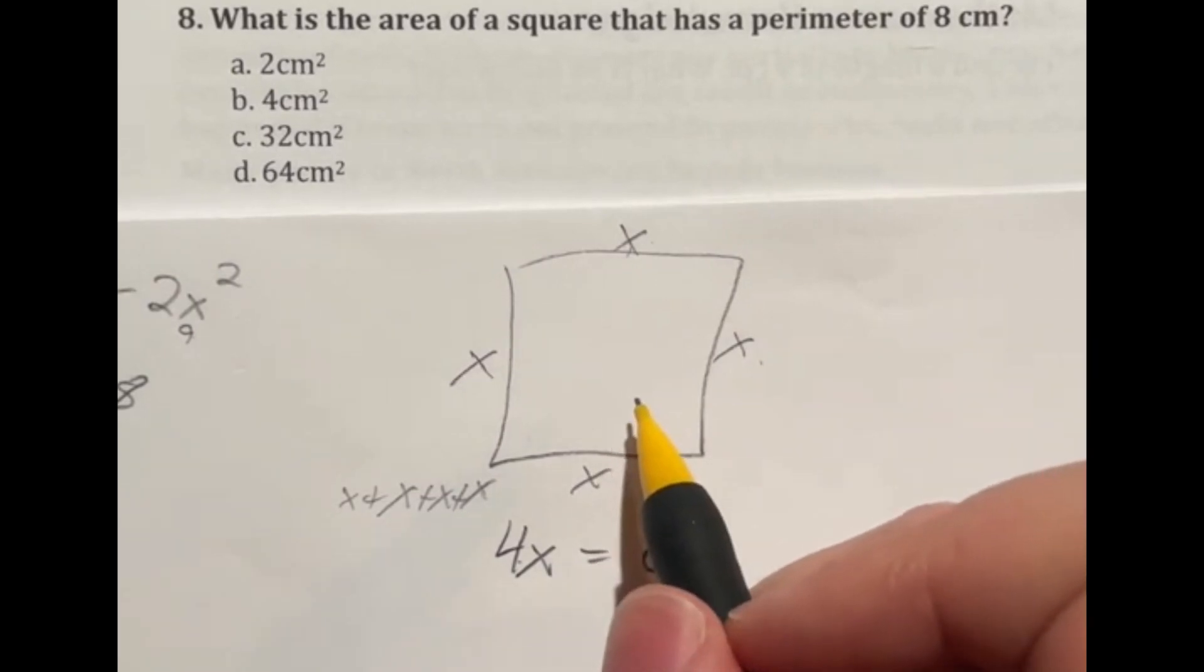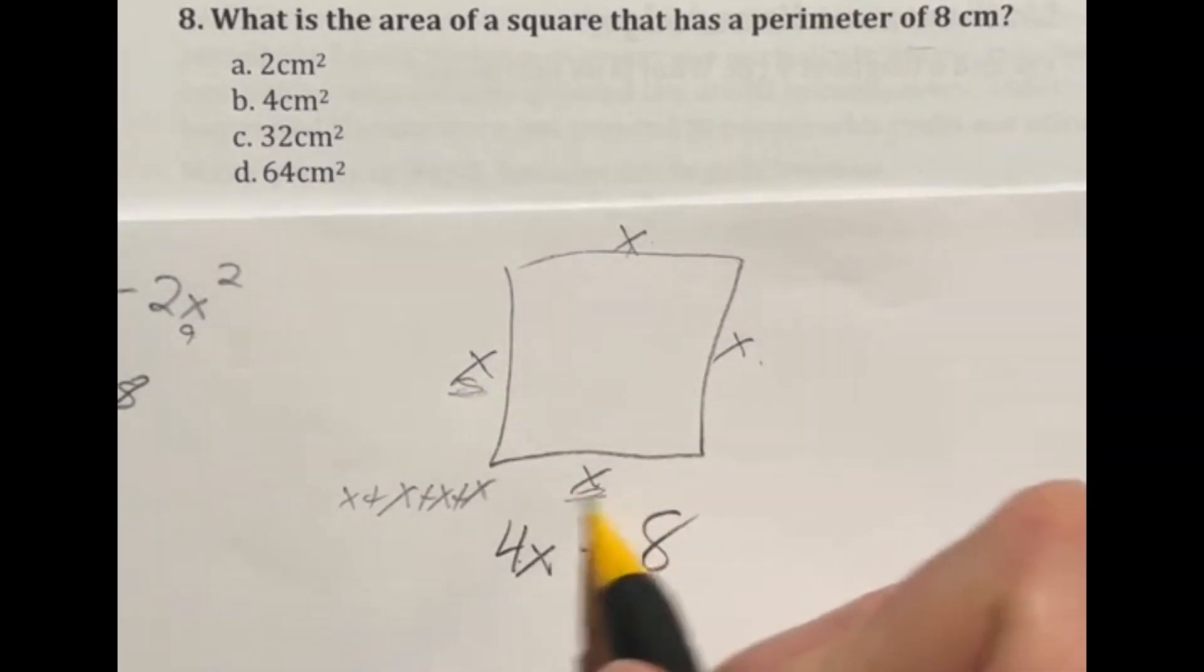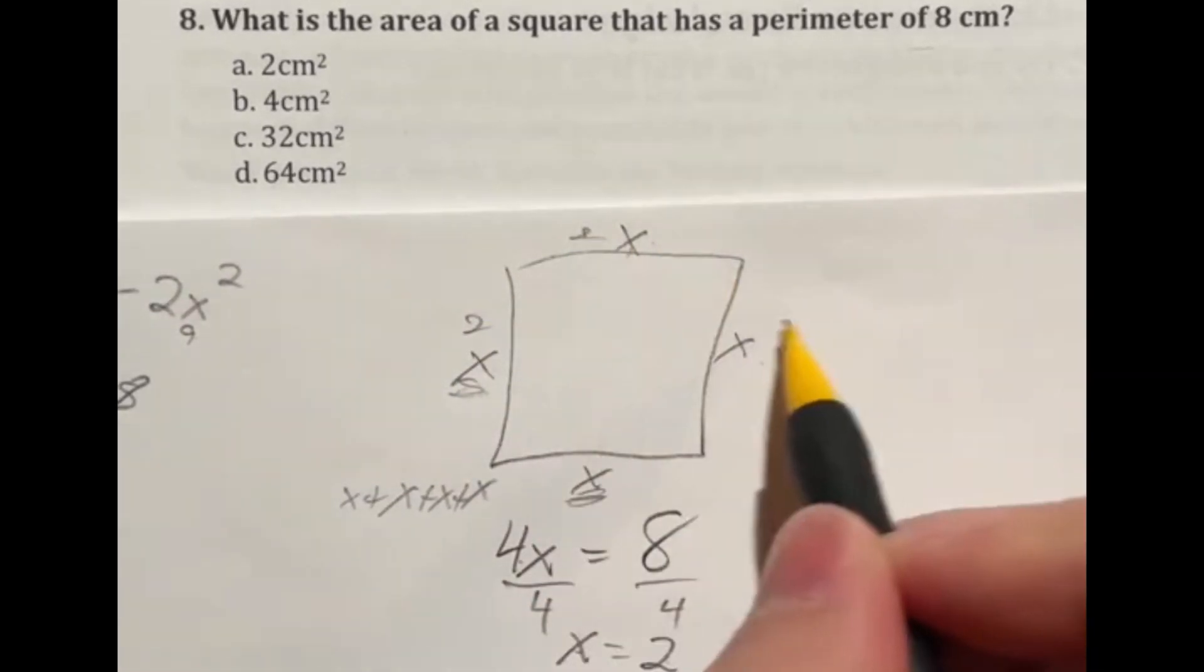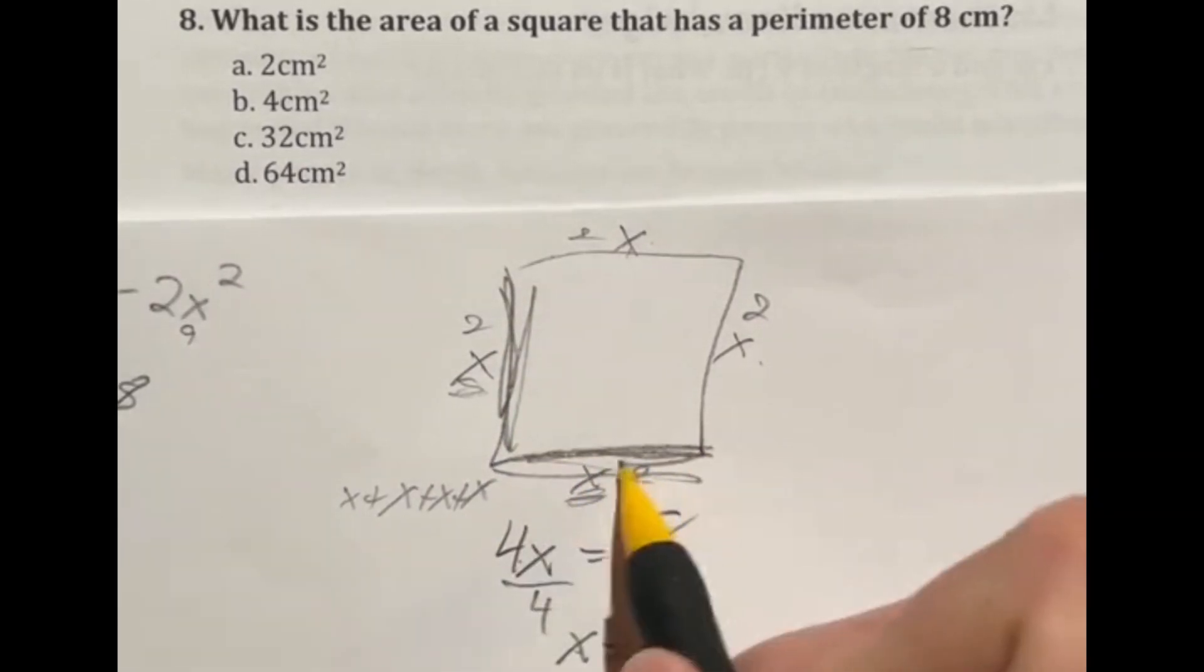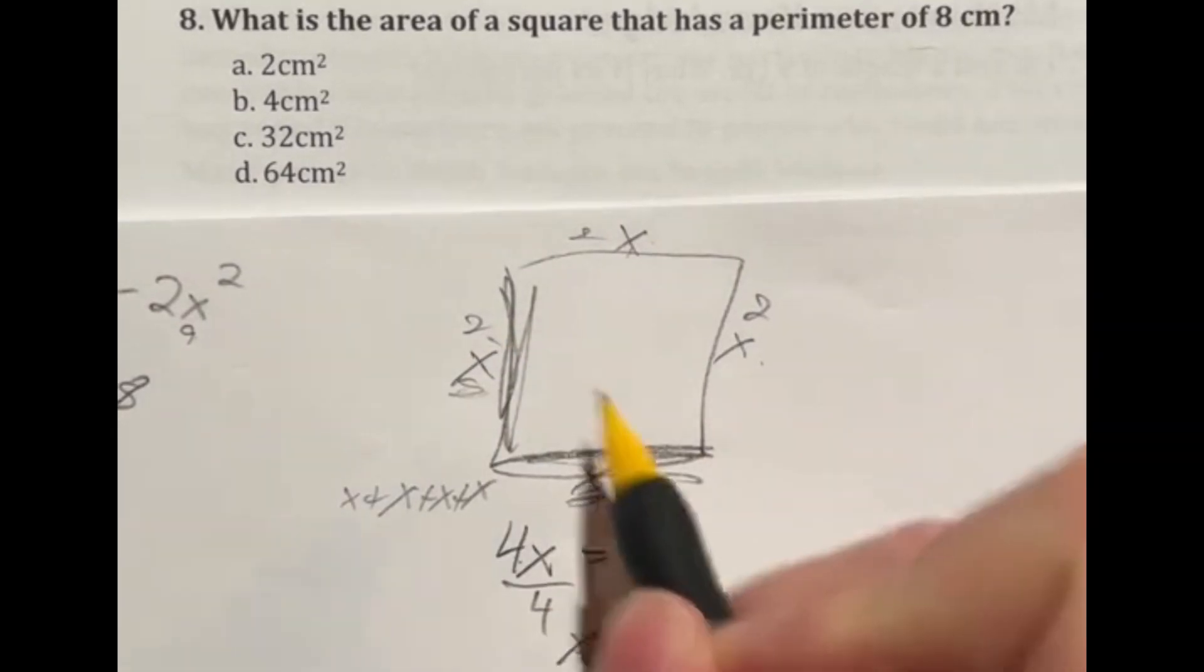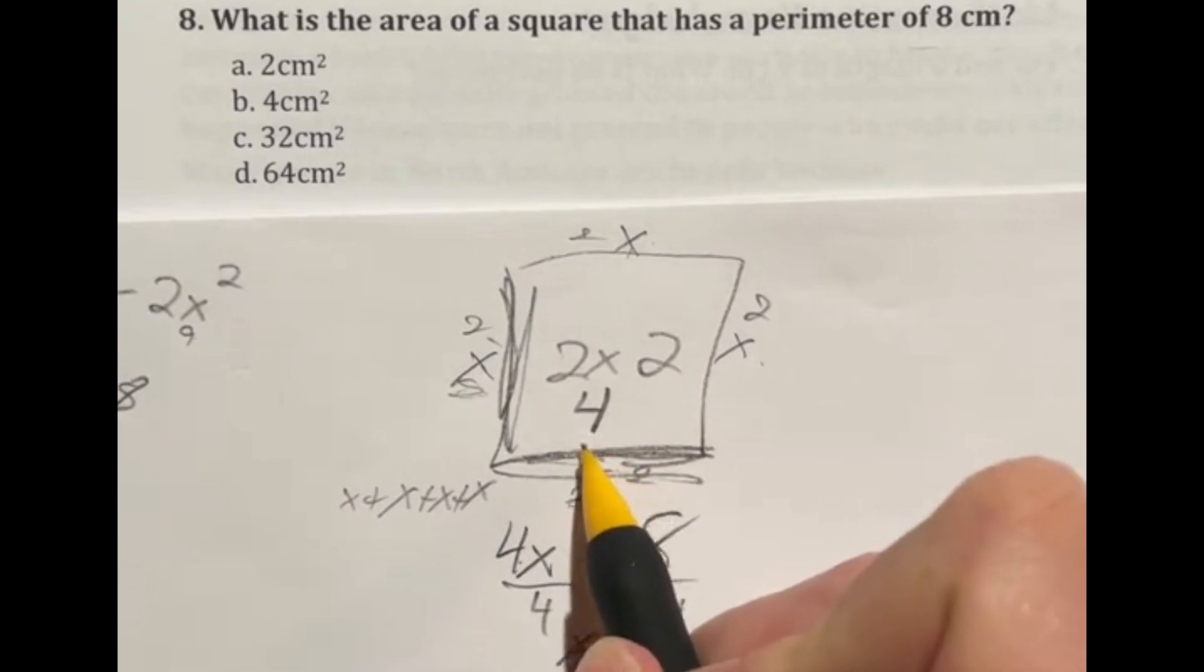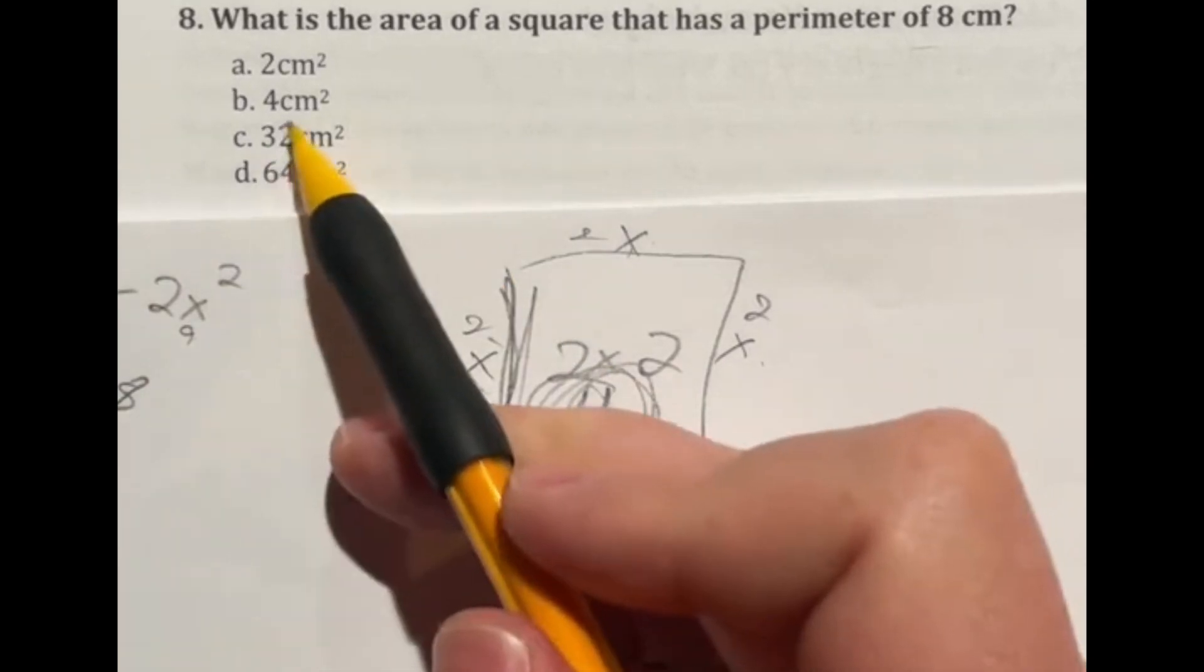Now we need to find the area of this guy. Well, we can't do that unless we know what the x is. So let's solve for x by dividing both sides by four. And that's going to give me x is equal to two. Now that I have x is equal to two, we know that each one of these are two. And we know that area is length times width. So that's just going to be two times two. So what is two times two, you got it, four. So that means that our final answer here, the area of this square is four, which is answer B.